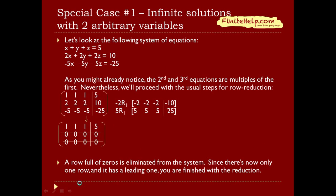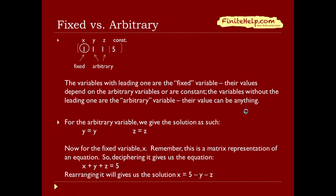Now there's only one row left, and it has a leading 1 — so we're finished with the reduction. Note: even though the column isn't literally full of written zeros, when there are no other entries, it counts as a column full of zeros. The variables with the leading 1 are the fixed variables, and the variables without the leading 1 are the arbitrary variables — their values can be anything. For the arbitrary variables we write: y equals y, z equals z.